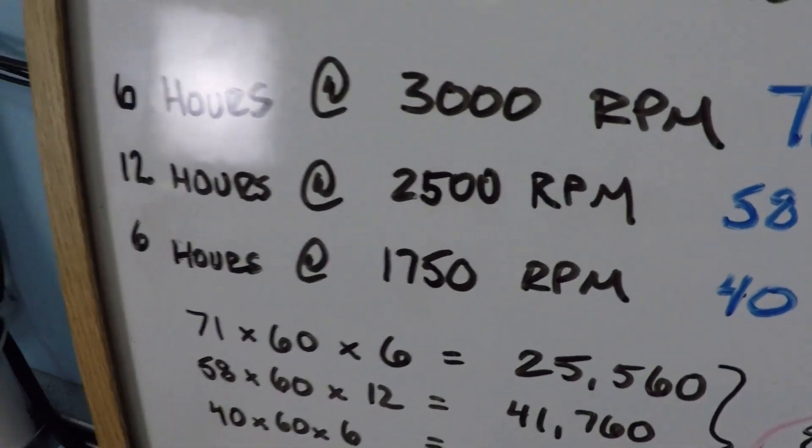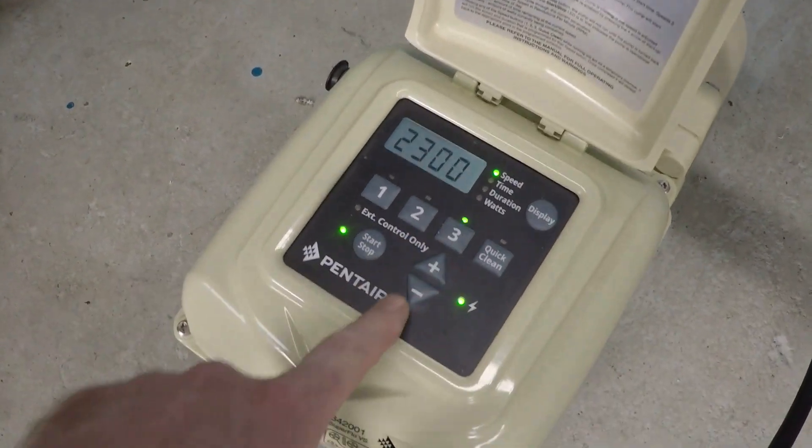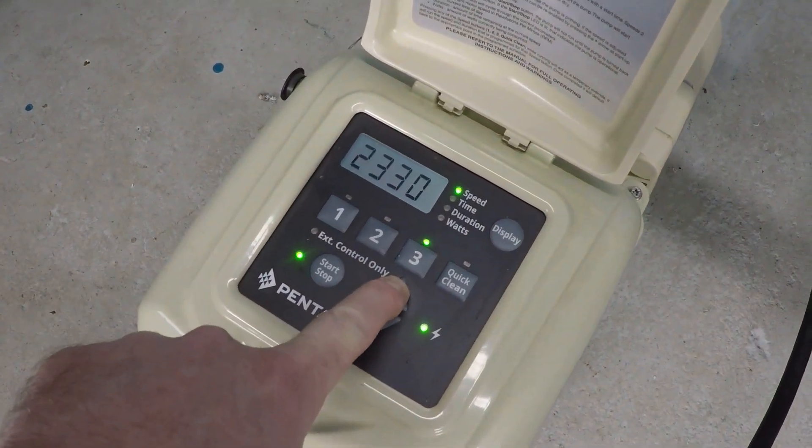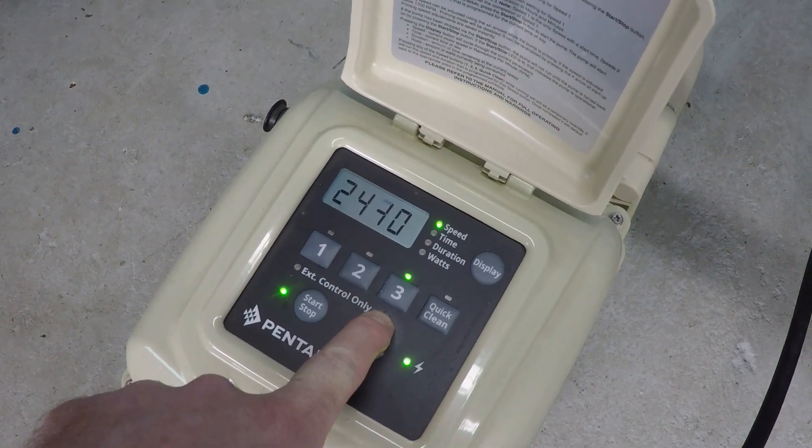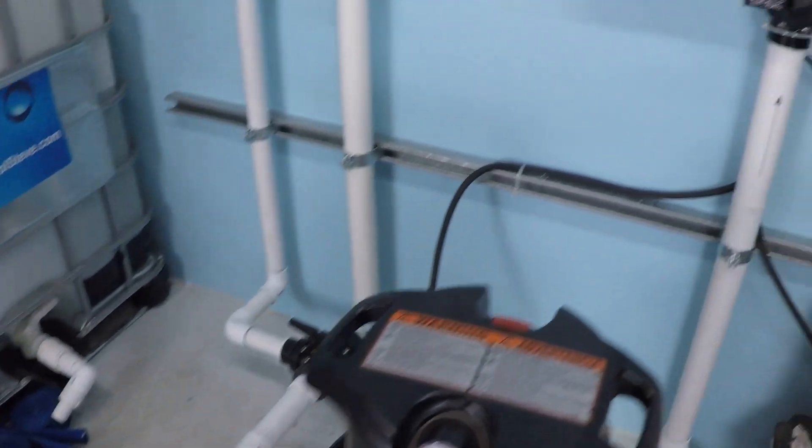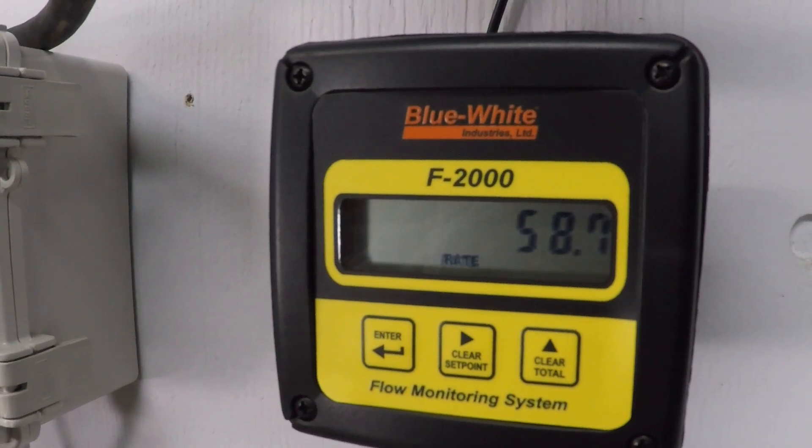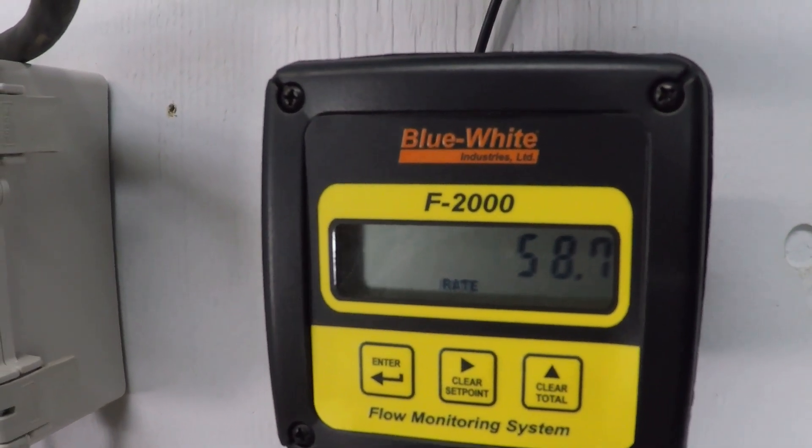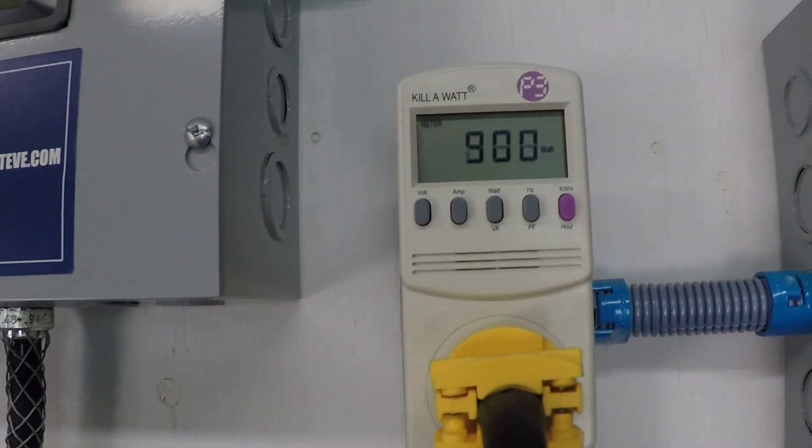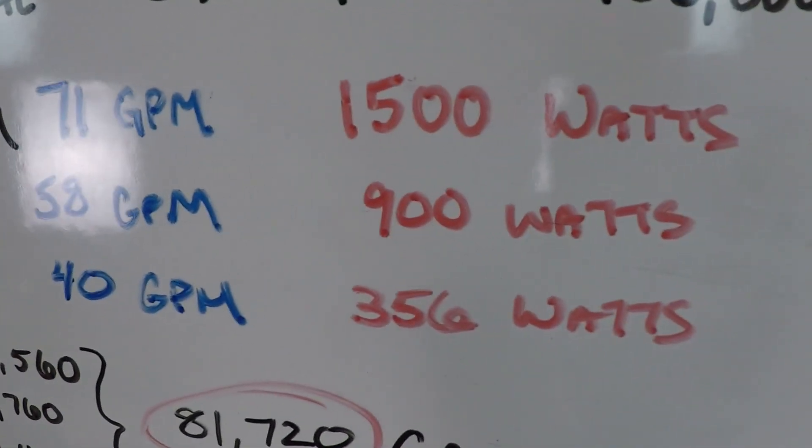Let's go ahead and test 2500 rpm. 58 and a half gallons per minute, 900 watts, and again that's what we're expecting, 58 gallons per minute, 900 watts.